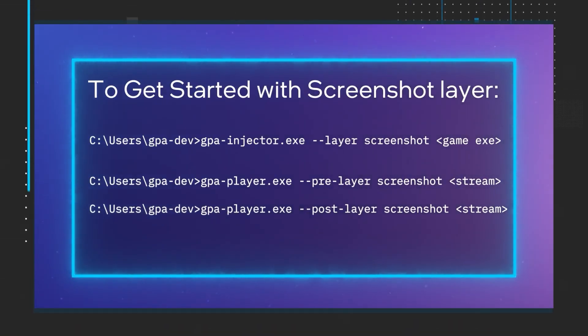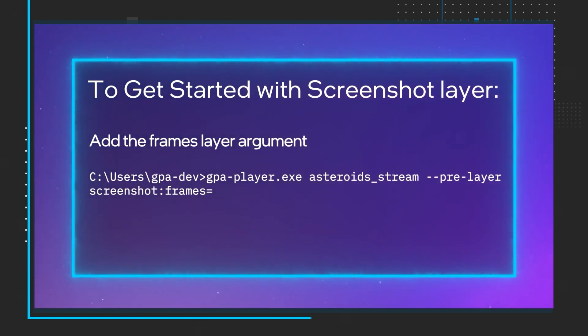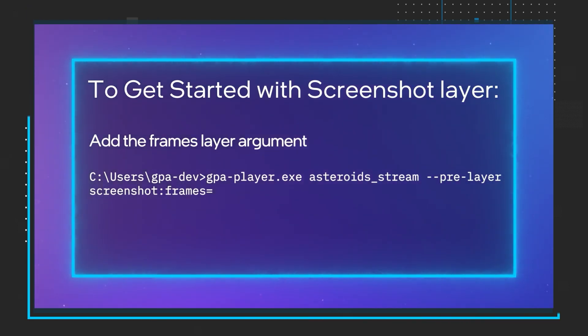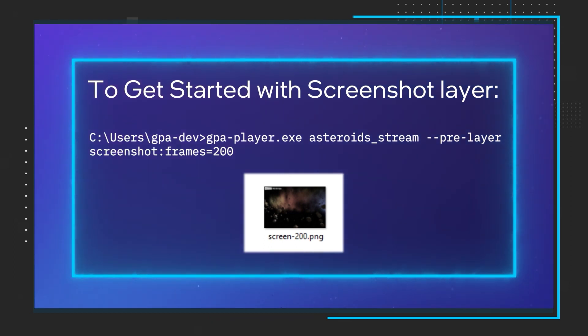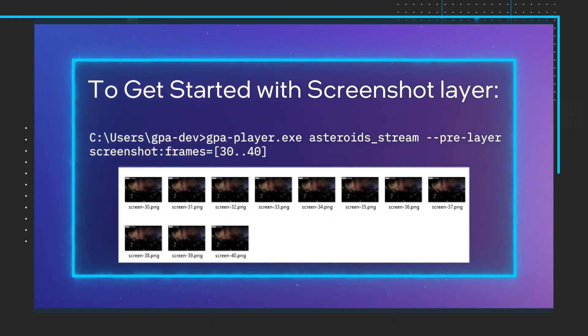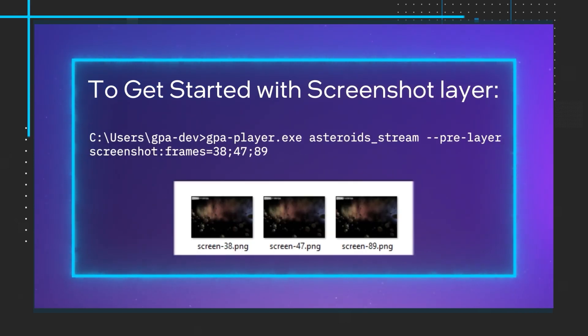First up, I'd like to point you over to the latest episode of the Intel Graphics Performance Analyzers Framework Quick Tips series focused on the screenshot layer. Watch the video to learn how to add screenshots to your captured stream so you can quickly find the frame you are interested in. For example, maybe you want to quickly glance through some previously captured streams to find a particular part of gameplay. Adding screenshots will allow you to visually search your stream folders. It's a short, informative video and well worth the watch.